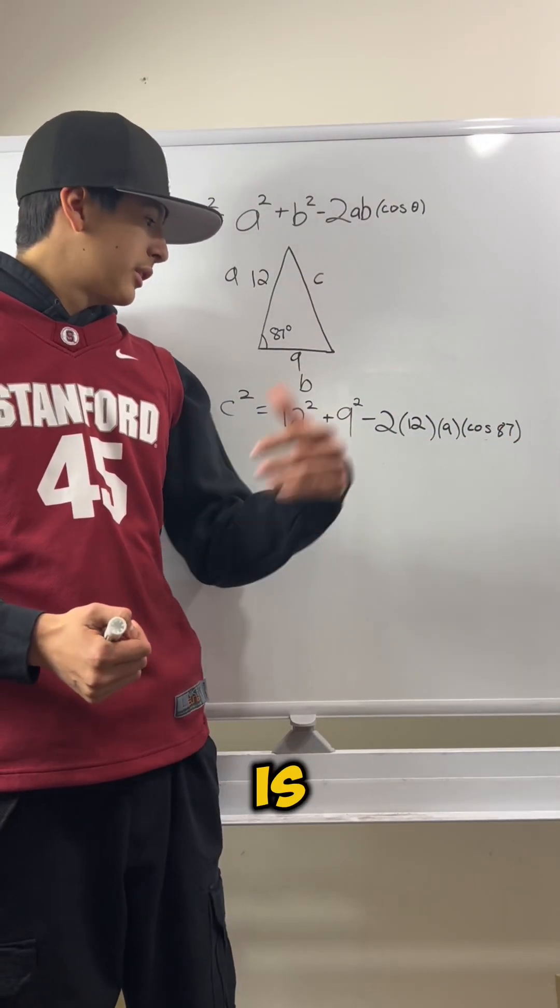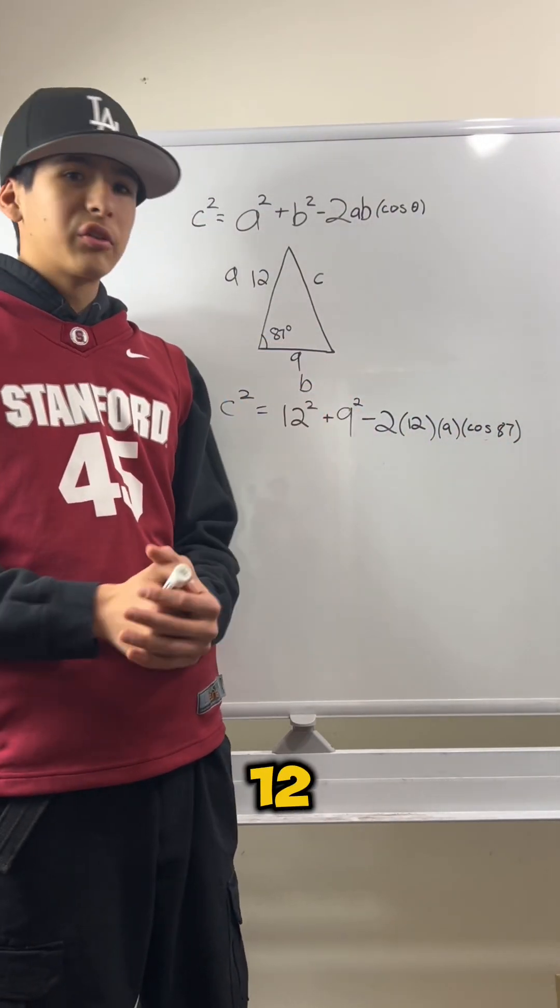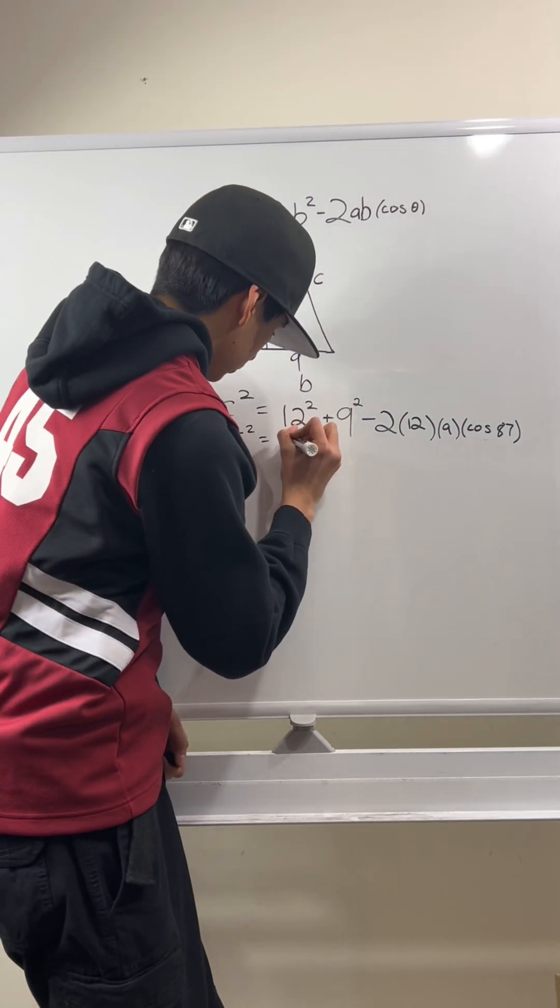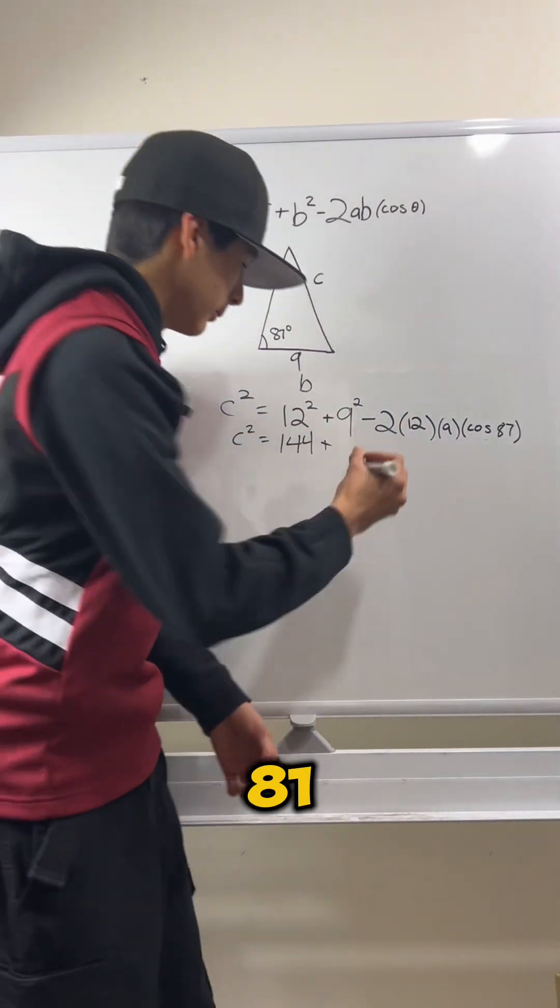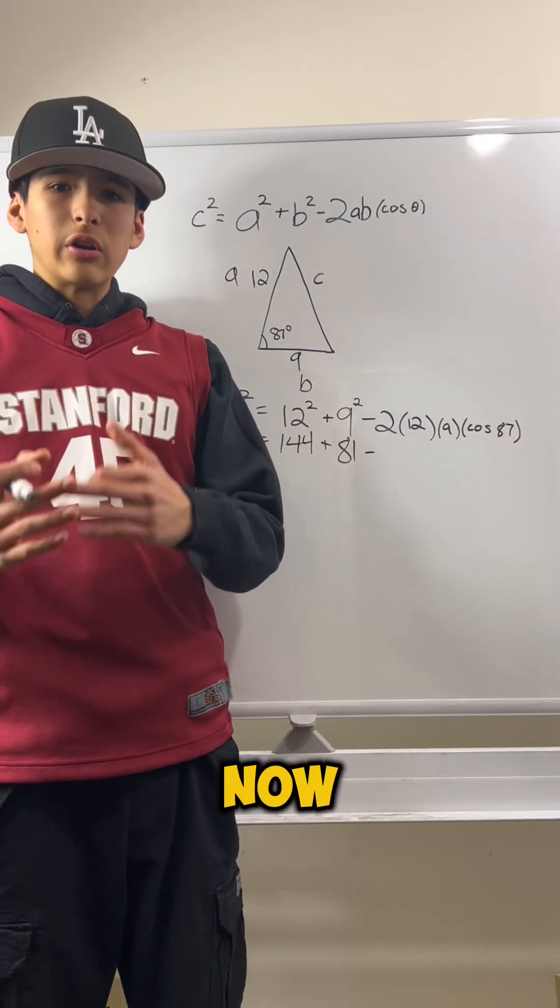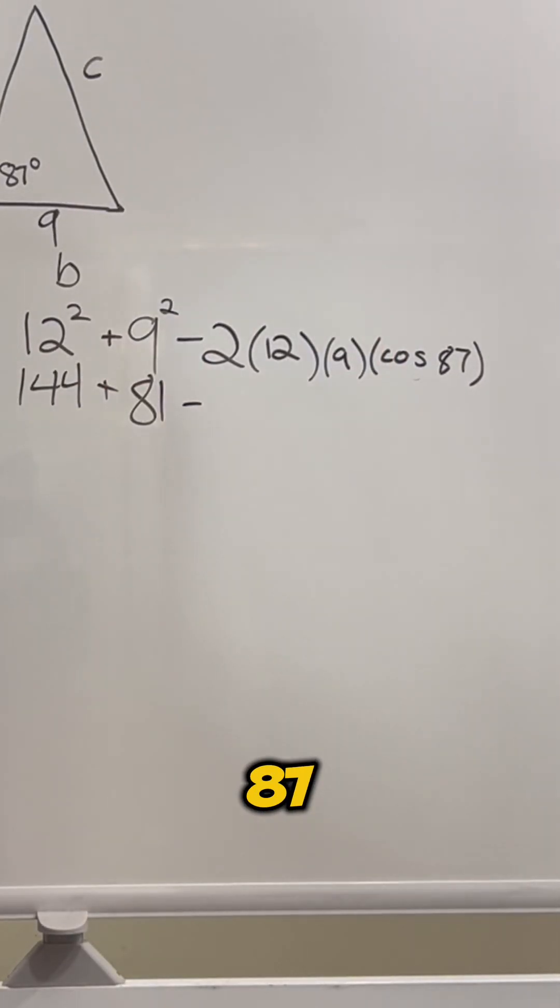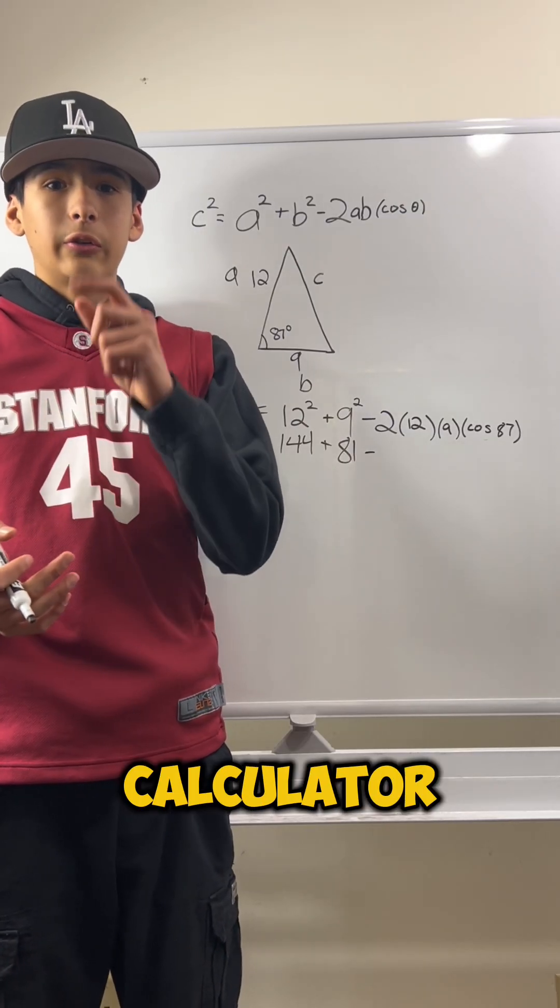So now all we have to do is the math. So we know that 12 squared is 144 and we know that 9 squared is 81. Now, acknowledging that we don't know the cosine of 87 yet, but we're going to go check that in our calculator just a little bit.